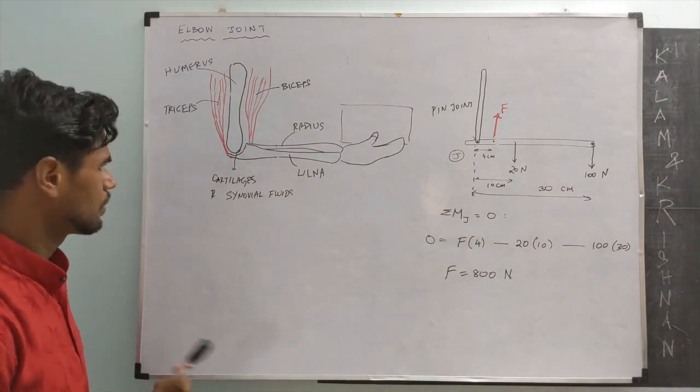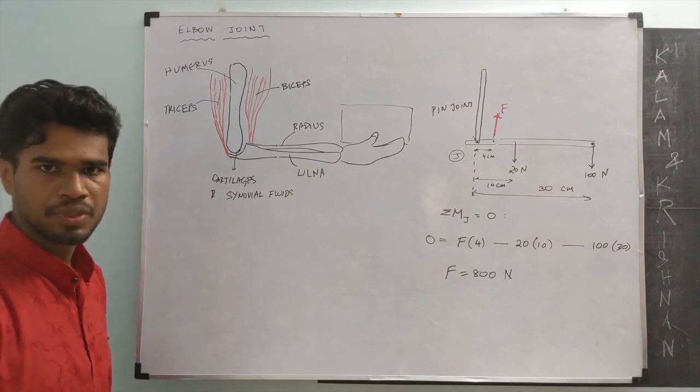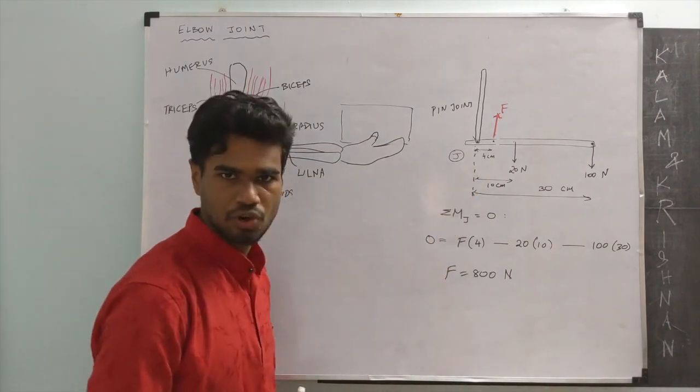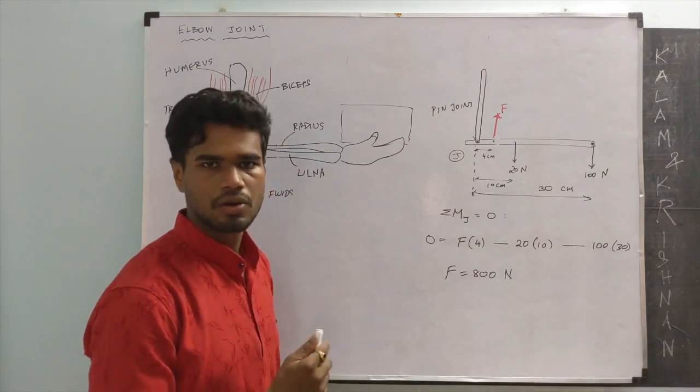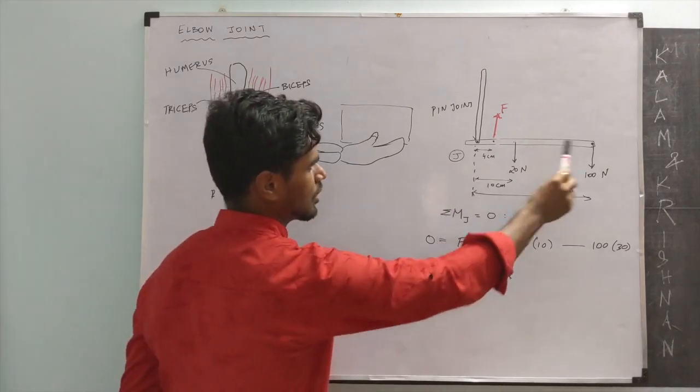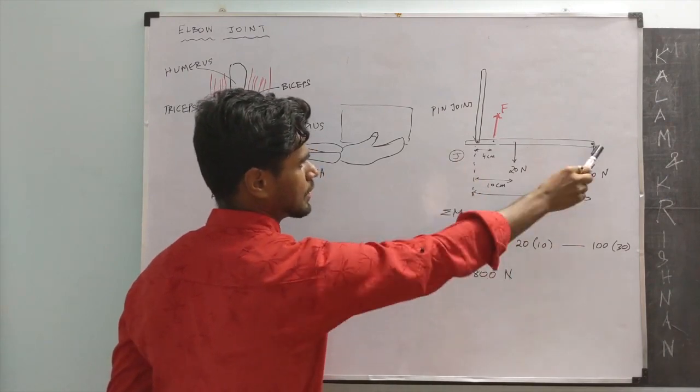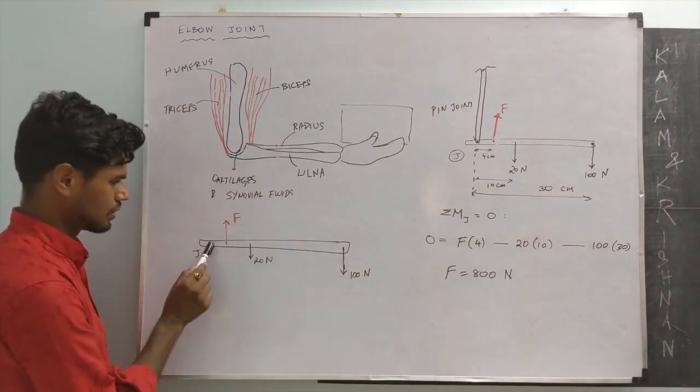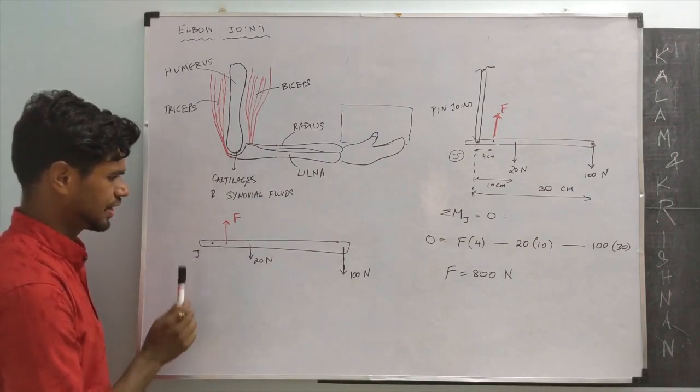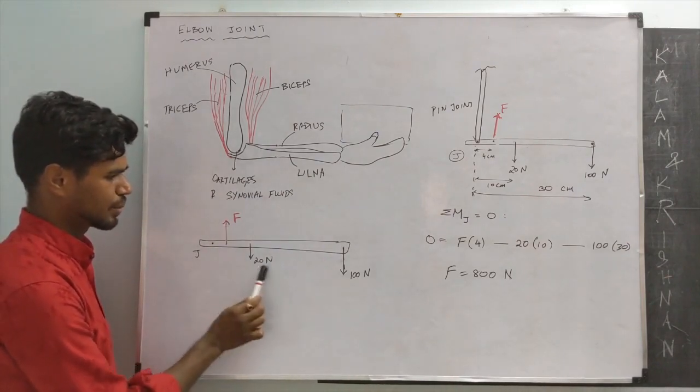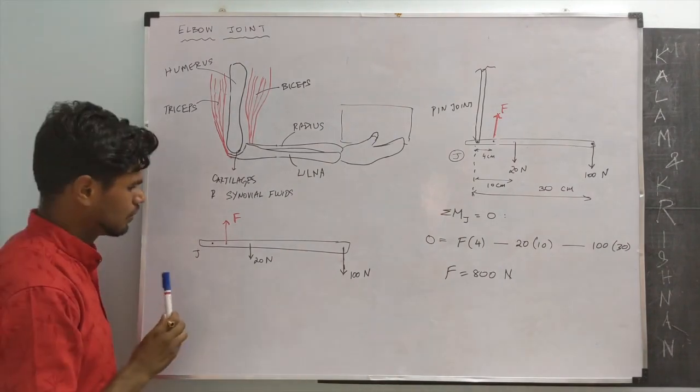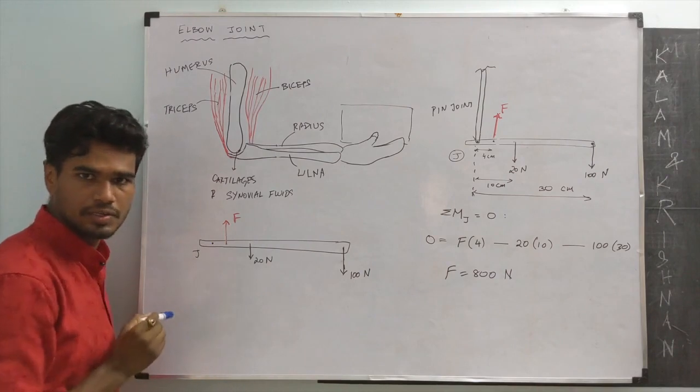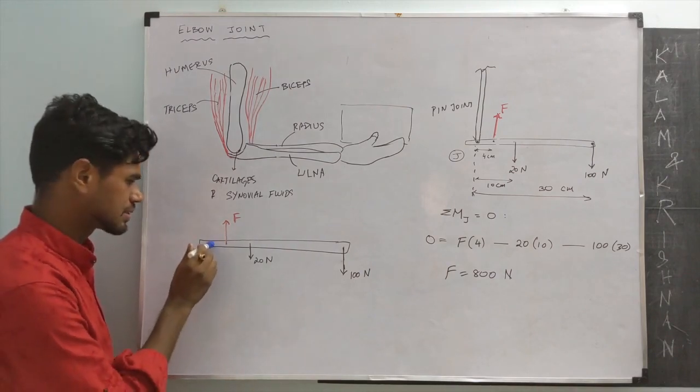Now let's go one step further and ask, what are the reaction forces at this joint? In order to do that, we have to draw a free body diagram of this particular bar. We have the bar, pin joint J, forces F, 20, and 100. Now we separated the top bar. We should account for the effects at the point of separation which is the joint J.